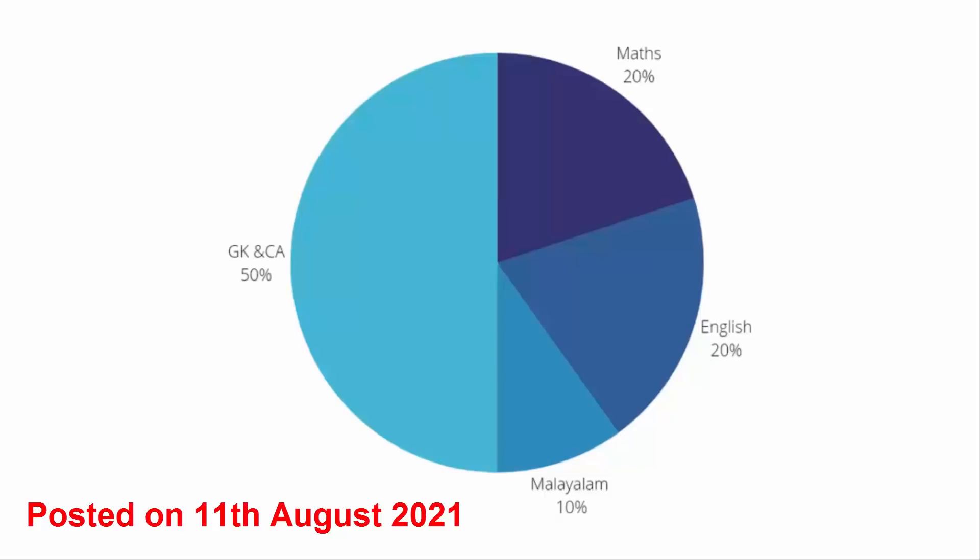We have questions about GK and current affairs. Arithmetic and Mental Ability is 20%, then General English — grammar and vocabulary — is 20%, and Malayalam is 10%. This is the best distribution.